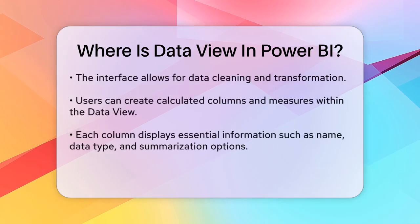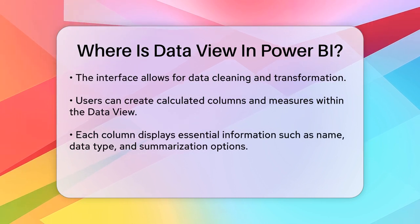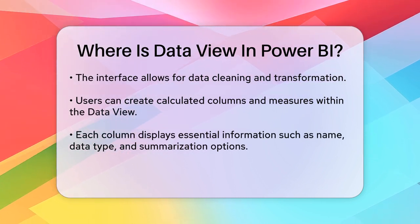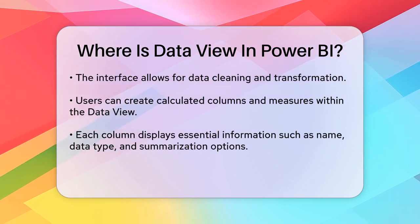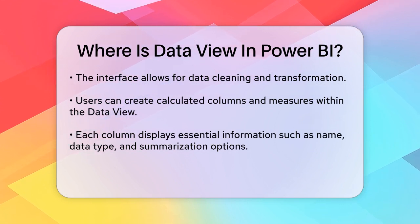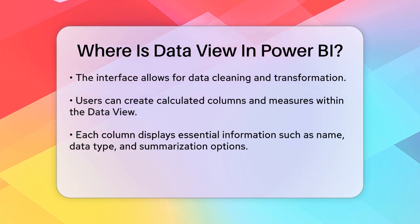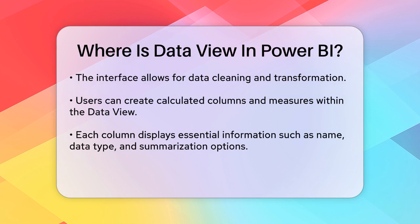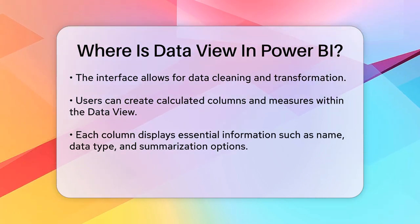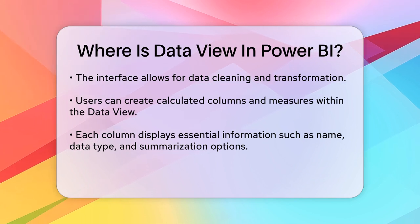In the Data View, each column provides important information, such as the column name, data type, summarization options, and data categories. For example, if you click on a specific column, you'll get a new tab in the ribbon called Column Tools that gives you detailed information about that column.